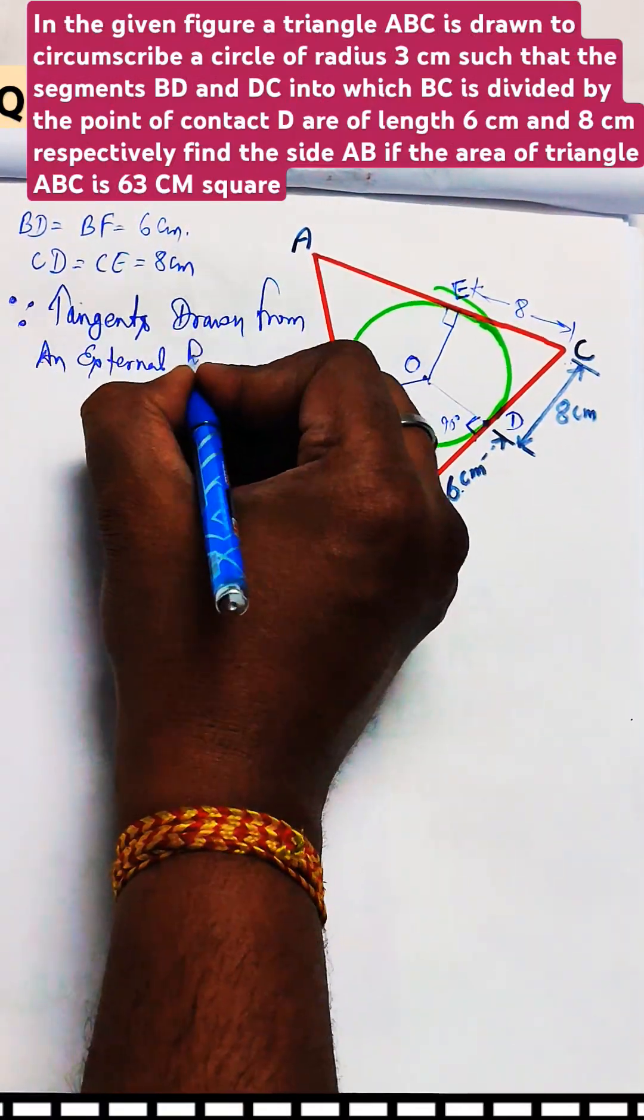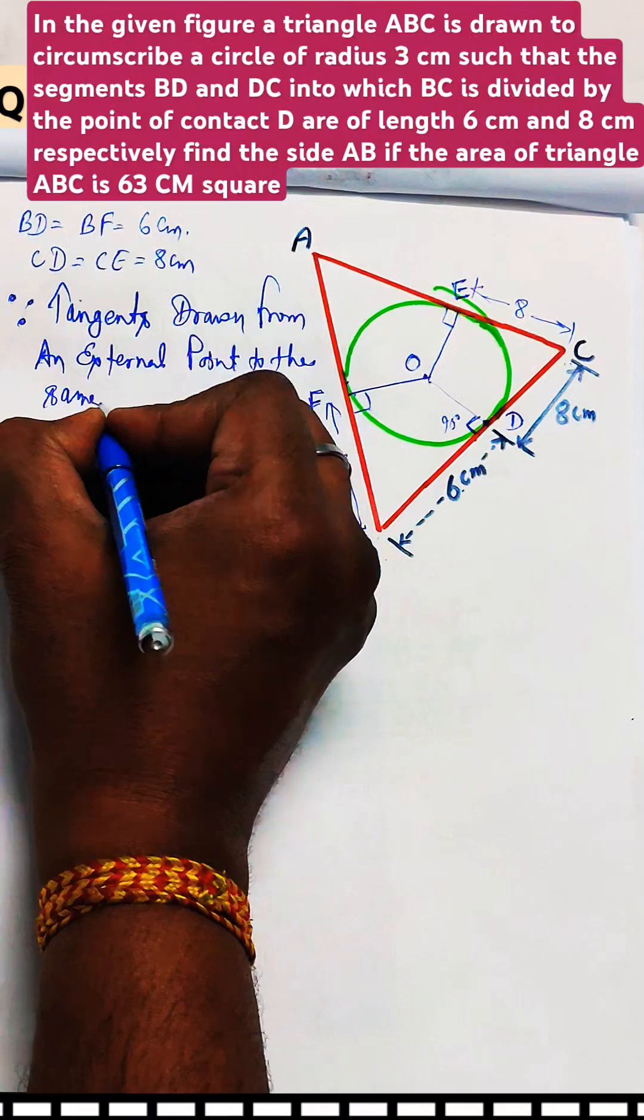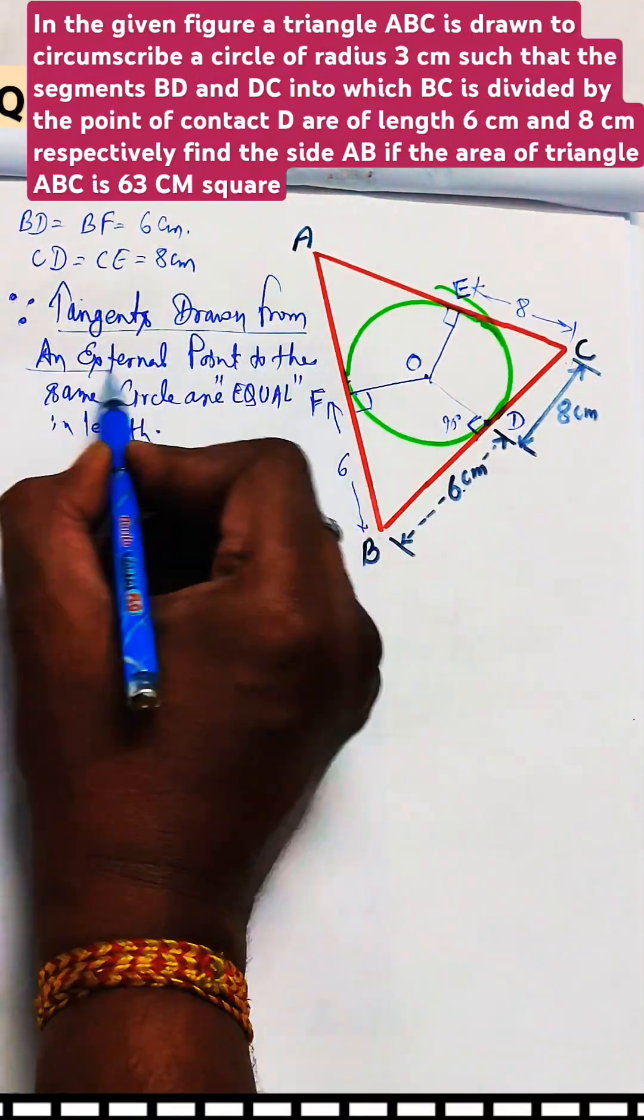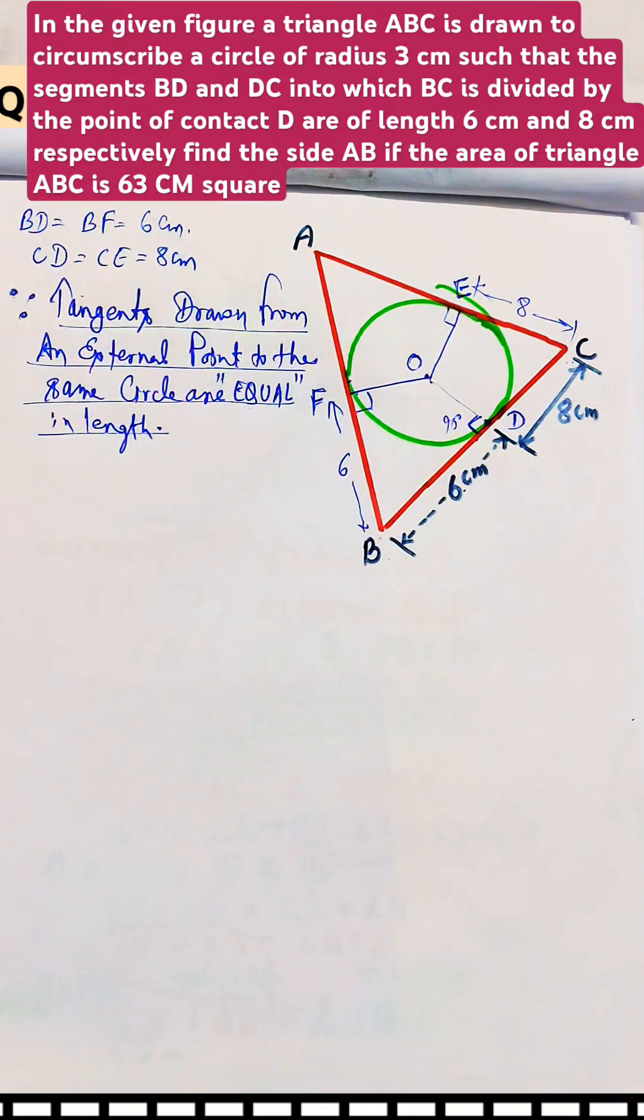BD equal to BF equal to 6 cm and CD equal to CE equal to 8 cm. So let AF as X cm. Since AF is X, AE is also equal to X.